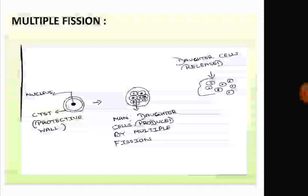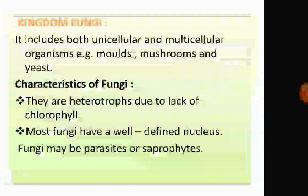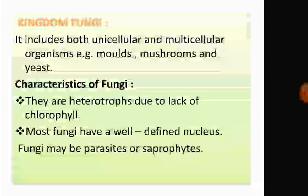Under unfavorable conditions, the Amoeba forms a protective wall around itself and the nucleus keeps multiplying. Under favorable conditions, when the cyst bursts, the daughter cells are released. This is how Amoeba performs reproduction. Next, we will discuss about kingdom Fungi.